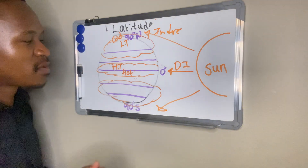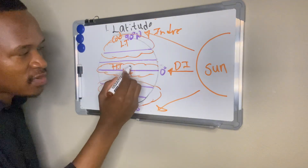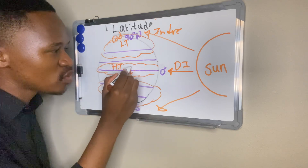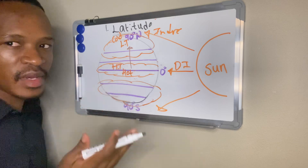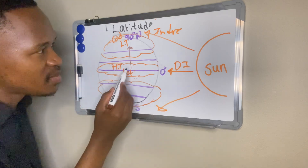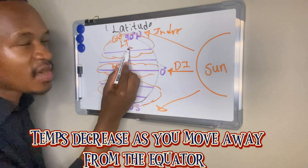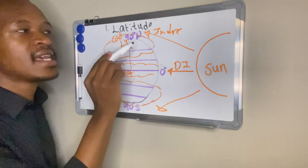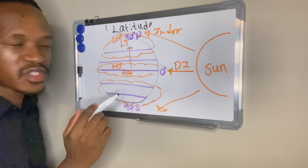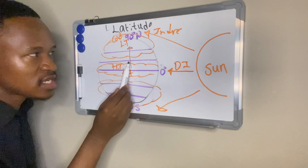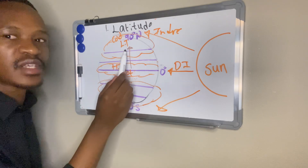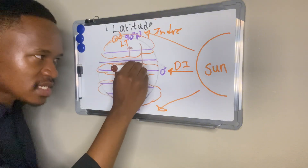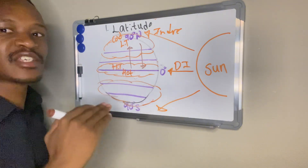As we move away from our equator towards our poles, temperatures will get lower and lower because the poles have low temperatures — they are receiving indirect insolation. If you move from the poles going towards the equator, temperatures will be higher because at the equator we receive direct insolation.